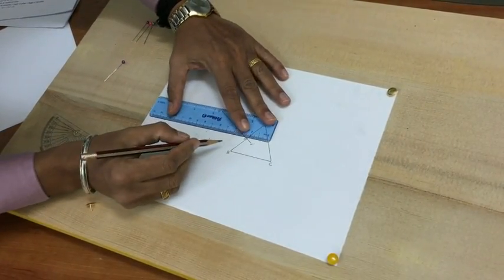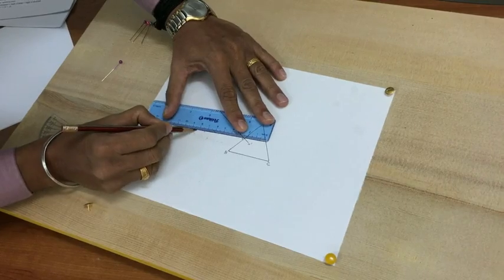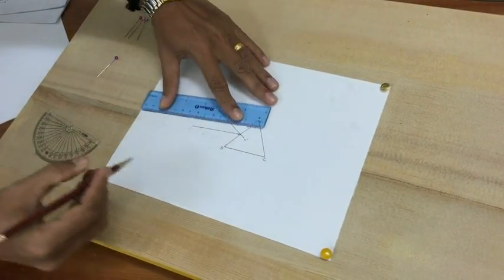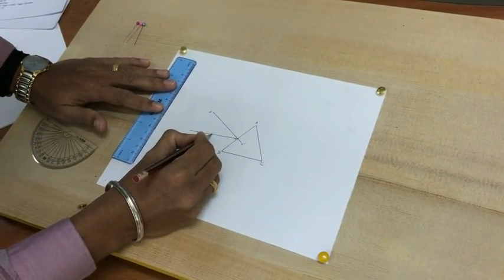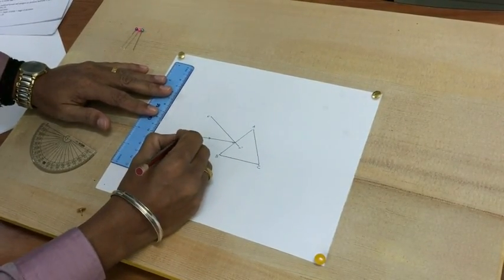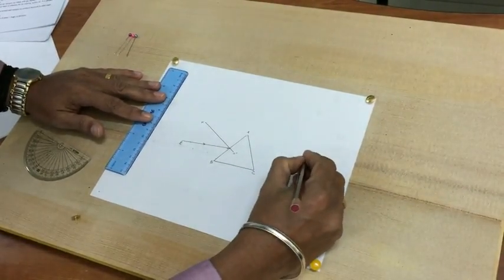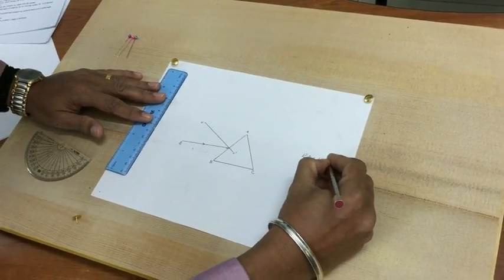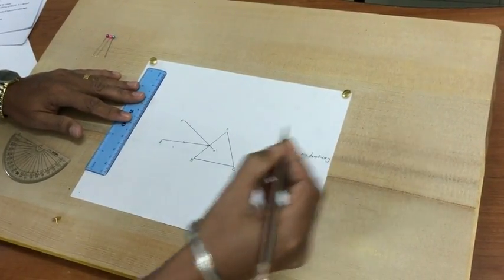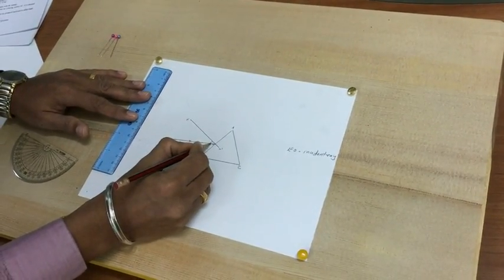With the help of a scale, join this point. Now you get an incident ray. Mark this as EO. So EO becomes the incident ray, and angle EON is the angle of incidence.